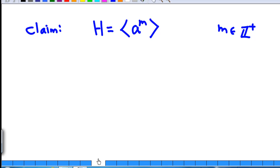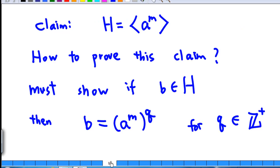Now, the claim is, with this m chosen, H is actually a cyclic group where the generator is a power m. How do we prove this claim?